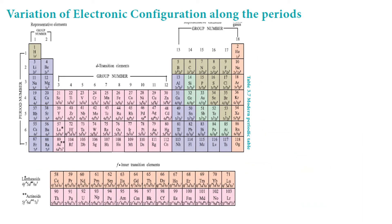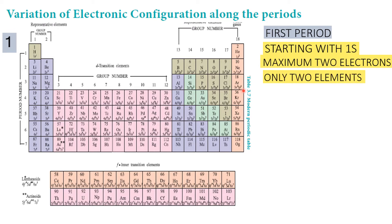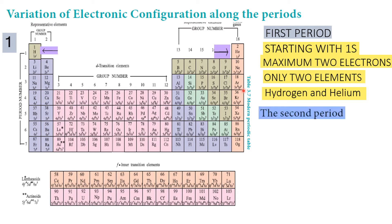Now let's look at the variation of electronic configuration along the periods. The first period starts with 1s1 and has a maximum of 2 electrons, so there are only two elements in the first period. The second period starts with 2s.